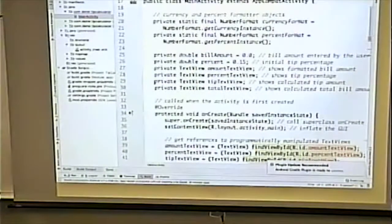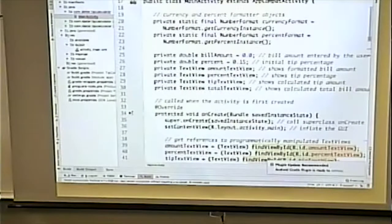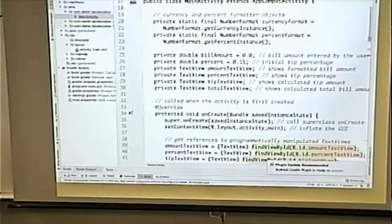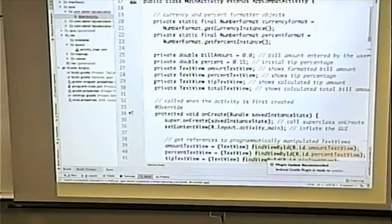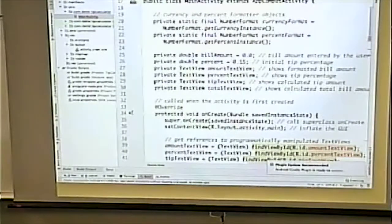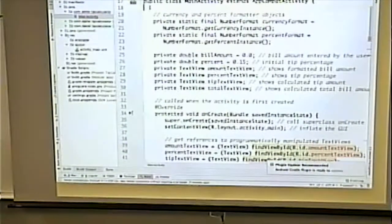Does everyone know what I mean when I say an instance variable? Or an attribute, I guess, is another way to say it. Does everyone know what that means? How can I tell that these are instance variables?